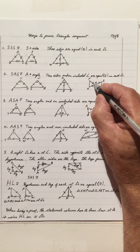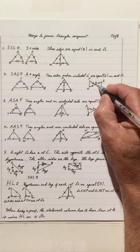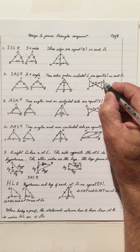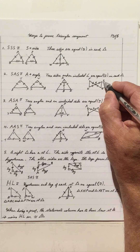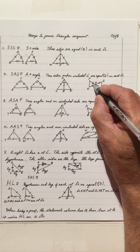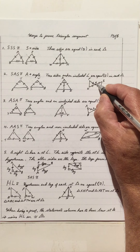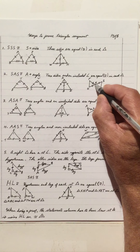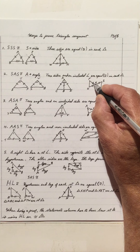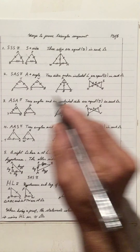This is also true: FX equals UX and OX equals SX — marked with double strokes and single strokes. These two angles are equal by VOAT (vertical opposite angles theorem), so it's a side, angle, side. Triangles are congruent.